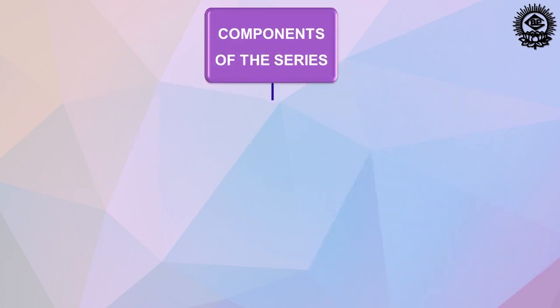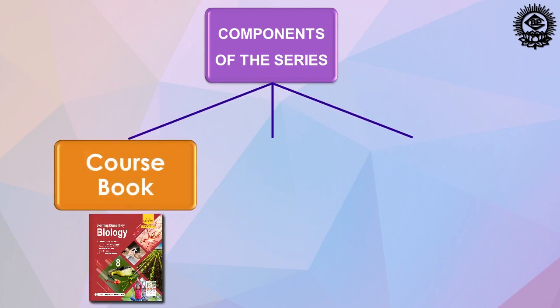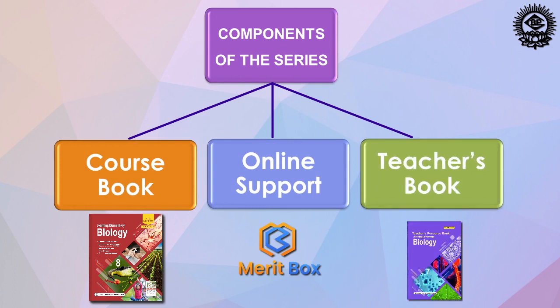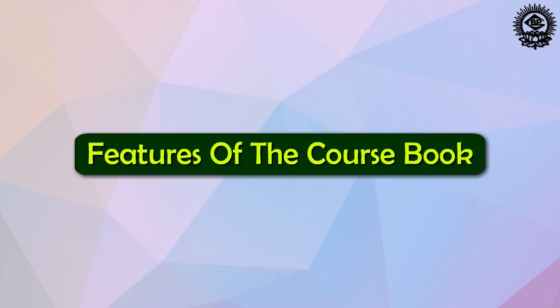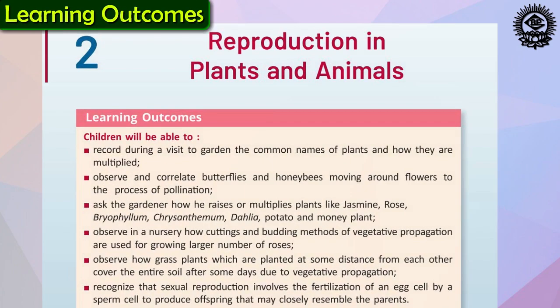This series contains three main components: the course book, online support, and teacher's resource book. Let's see various features of the course book. Each chapter starts with learning outcomes, which represents an overview of the chapter that is going to be discussed.